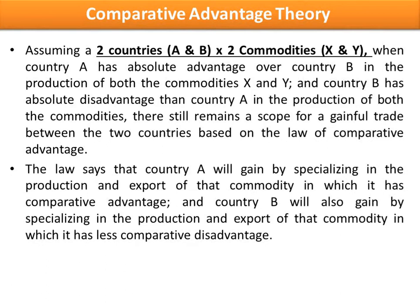The law says that country A will gain by specializing in the production and export of that commodity in which it has comparative advantage, and country B will also gain by specializing in the production and export of that commodity in which it has less comparative disadvantage.